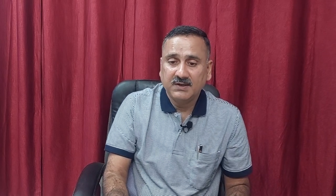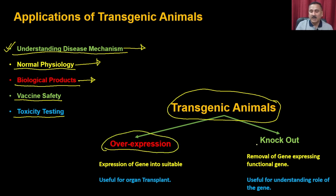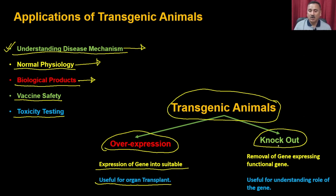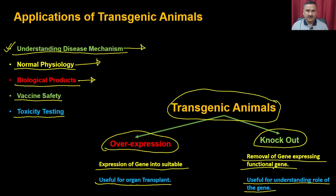Transgenic animals can be of two types: animals where you are over-expressing a particular gene, or animals where you are removing a particular gene. When you over-express a gene using a suitable vector, these transgenic animals are often used for organ transplant. When you do knockouts — removing a functional gene — it is useful for understanding the role of that gene in a particular process such as cancer development or normal physiology.